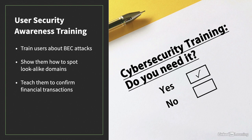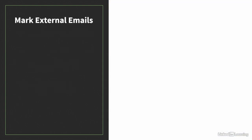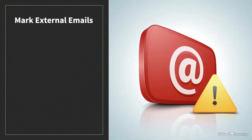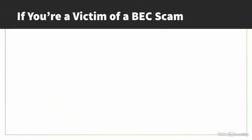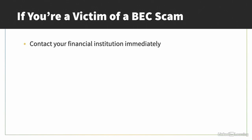Any change in payment instructions should be verified, no matter how it is sent or who it comes from. Another way to protect against BEC is to add a warning banner to emails coming from outside your organization. Marking external emails helps warn users that an email spoofed to look like it's from someone within the organization really isn't. Train users to understand what these warning banners mean and why they're important. If you or someone in your organization is a victim of a BEC scam, you should contact your financial institution immediately — in some cases, money transfers can be frozen or canceled.